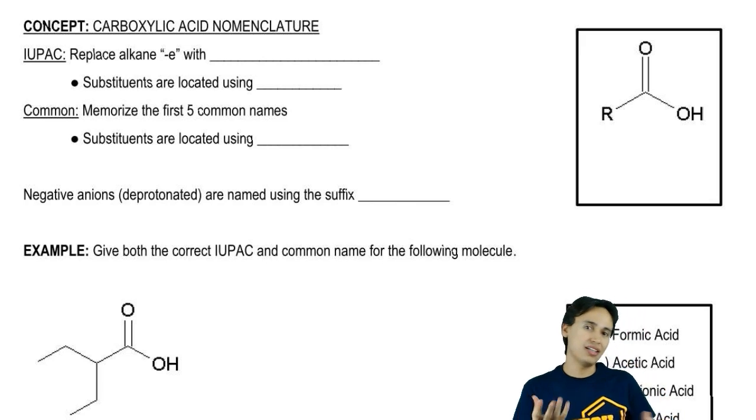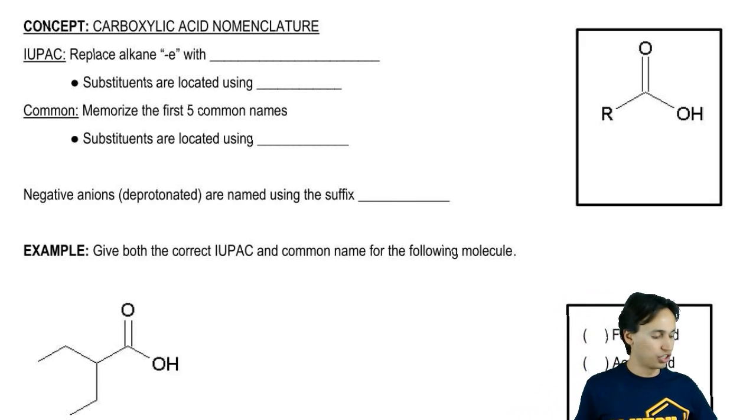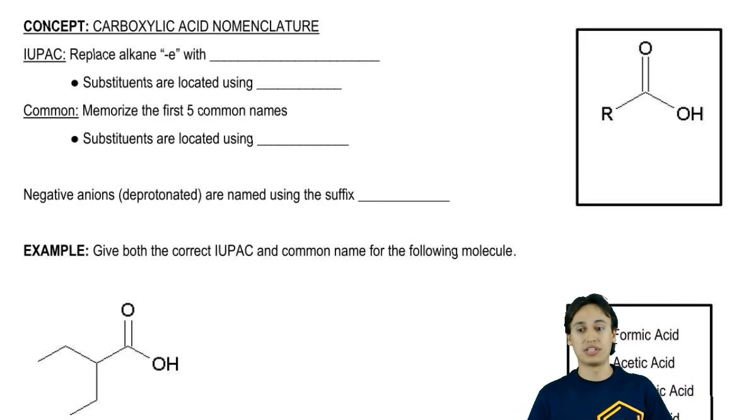There are two really competing and popular ways to name carboxylic acids and I'm going to teach you both. There's the IUPAC system and the common name system. They're both good in their own ways and you're going to see them both this semester. Let's start off with the easier one, IUPAC.